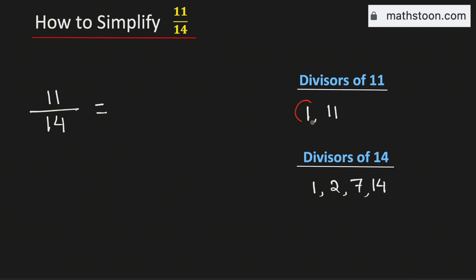So we see that 1 is the only common divisor of 11 and 14. Now to simplify 11 over 14, we will divide both the numerator and the denominator by their common divisors, which is 1 here.